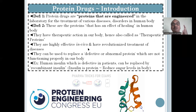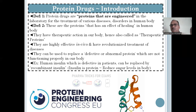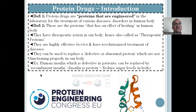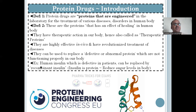These proteins have a healing effect on the human body — they have therapeutic action, that's why they are called therapeutic proteins. They are highly effective in vivo and have revolutionized treatment of diseases. They can be used to replace defective proteins in our body — you remove the abnormal non-functioning proteins and replace them with corrected ones. For example, a diabetic patient who produces defective insulin is given recombinant insulin protein.